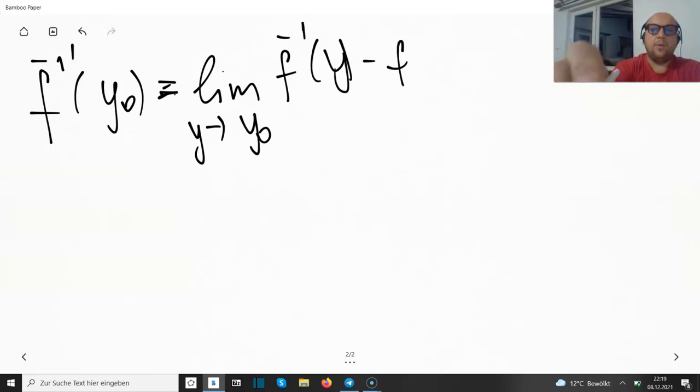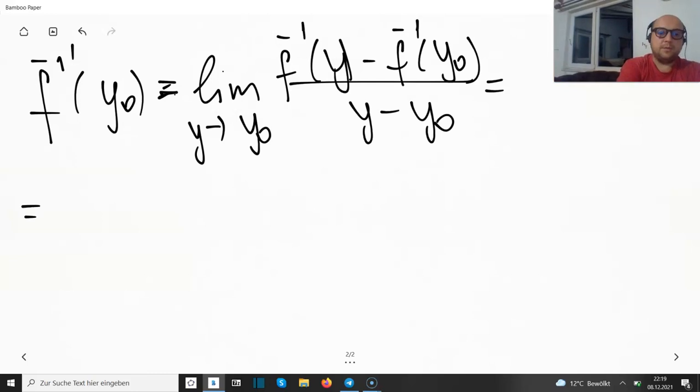We're having f^(-1)(y) minus f^(-1)(y₀) divided over y minus y₀. This is the definition by the first principle.